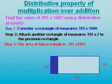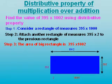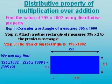So this gives us a big rectangle whose length is 1002 and breadth remains same as 395. So we can say that the area of the big rectangle, that is 1002 multiplied with 395, is equal to the sum of the areas of two small rectangles.